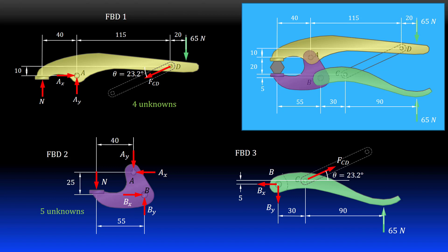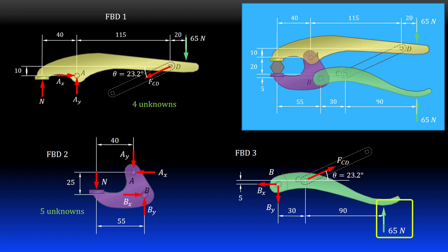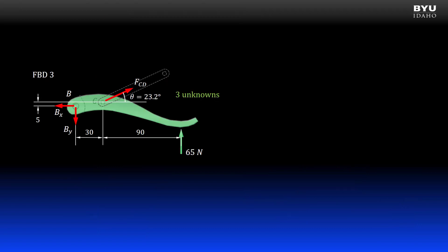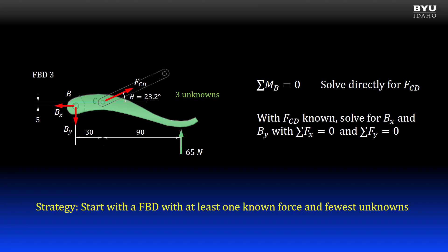Free body diagram three is the bottom right member. The directions of all the unknown forces are dictated by the other two diagrams. There is one known applied force and three unknown forces. There is good reason to go here next — it has a known force applied and the fewest number of unknowns. I cannot get any unknown forces directly by summing forces, but if I sum moments at point B I can find force CD directly. Once I solve for force CD I can get BX and BY by summing forces to zero. So a good strategy is, when possible, start with a free body diagram that has at least one known force and the fewest unknowns.